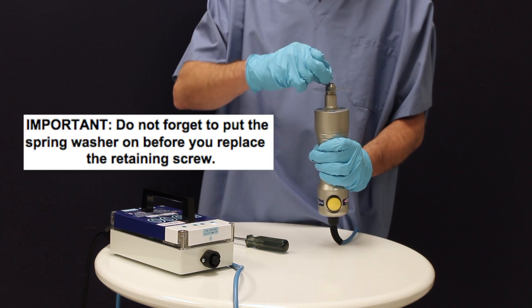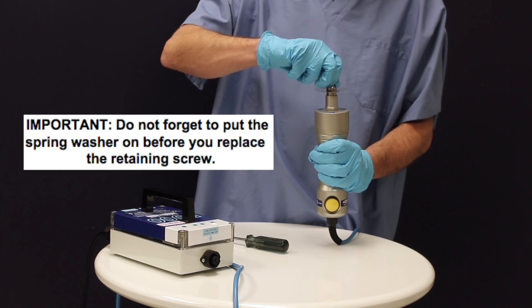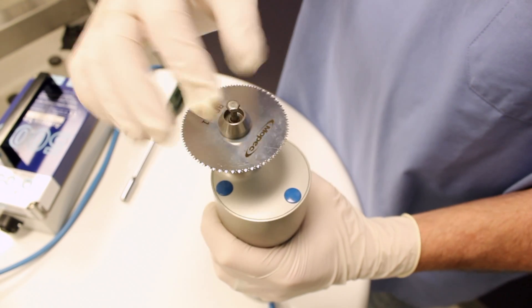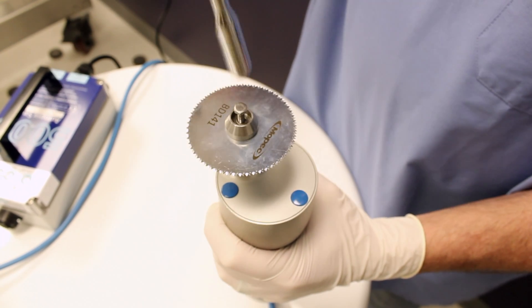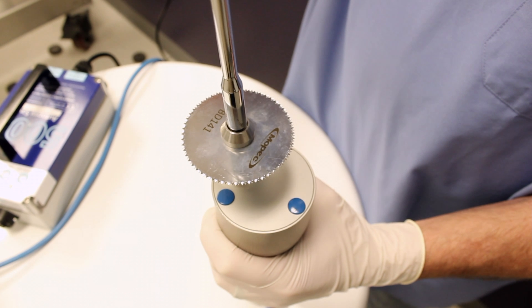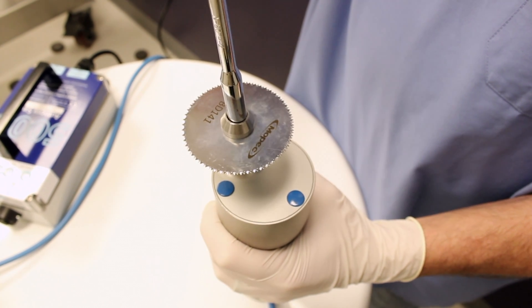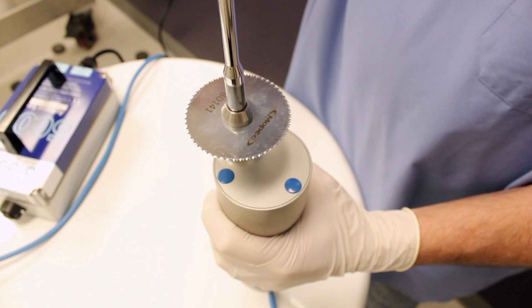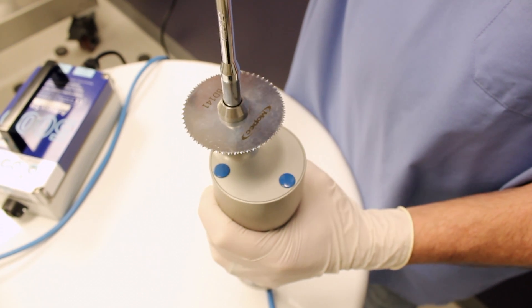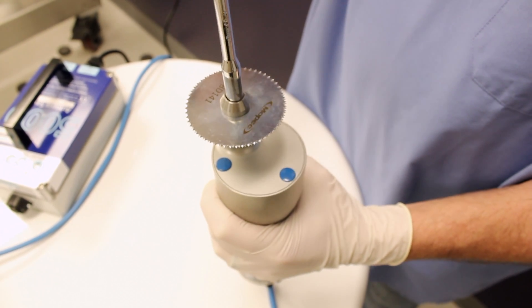Replace the clamp by starting the retaining screw into the thread. Using the same tool as before, tighten the blade down. Do not over-tighten. Once you meet resistance, give it one small turn until it stops moving.